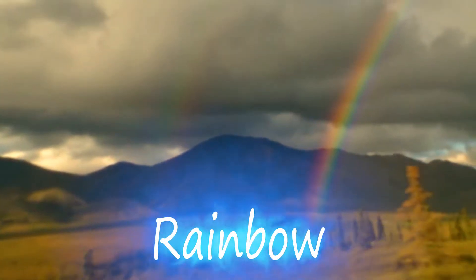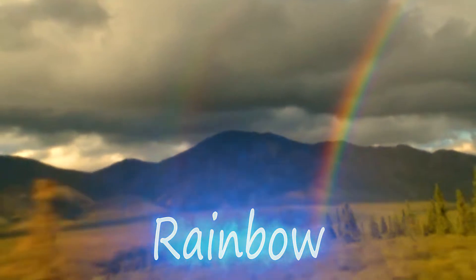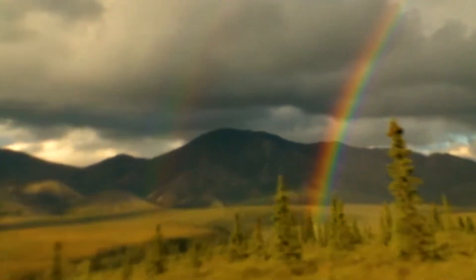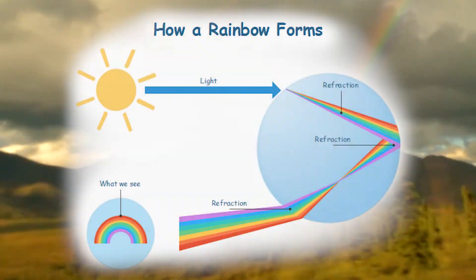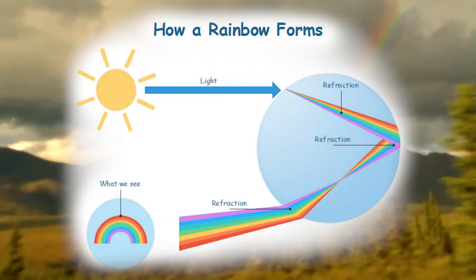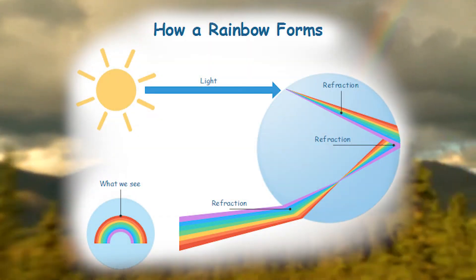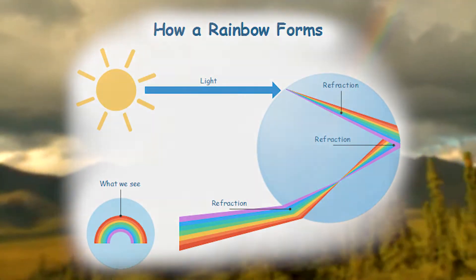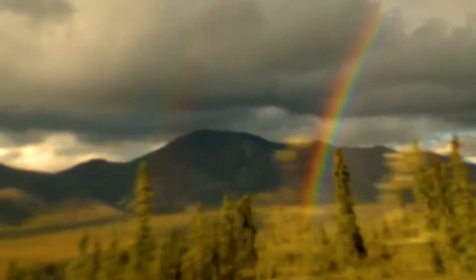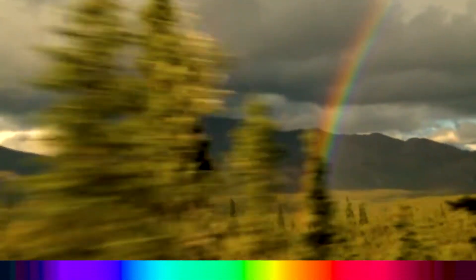A rainbow is a meteorological phenomenon that is caused by reflection, refraction, and dispersion of light in water droplets, resulting in a spectrum of light appearing in the sky.